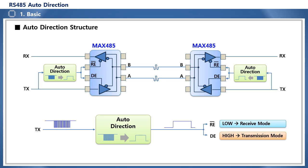By using the transmit signal TX from the MCU as an input to the auto-direction circuit, a logic high is output during the transmission packet and simultaneously applied to the direction control pins RE and DE. This sets the DE and RE pins to high, enabling transmit mode. When there is no TX signal, the auto-direction circuit outputs a logic low, which is applied to the DE and RE pins, setting them to low and thereby enabling receive mode.